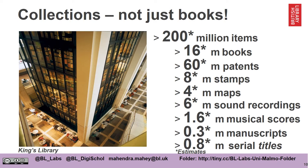Our collections are vast. We're probably the first or second largest library on the planet. We have over 200 million items — 16 million of them are books, around about nine percent. As you can see we have many other things like patents, stamps, maps, sound recordings and musical scores, manuscripts and serial titles. So the library doesn't just contain books.